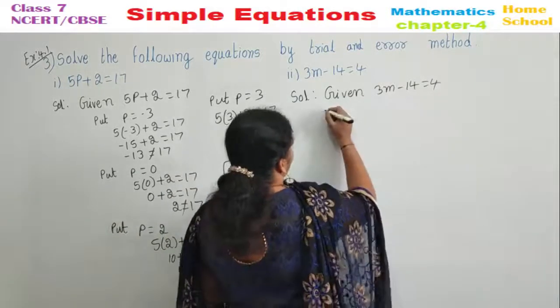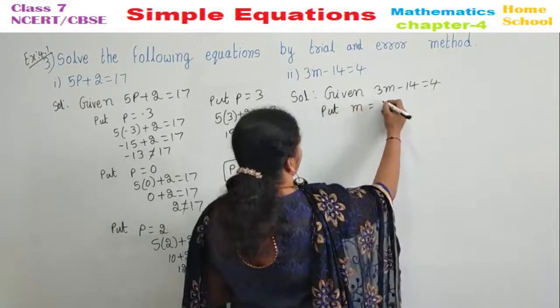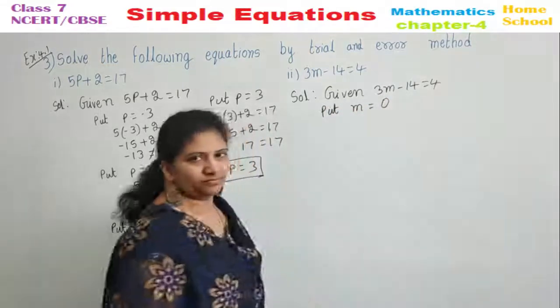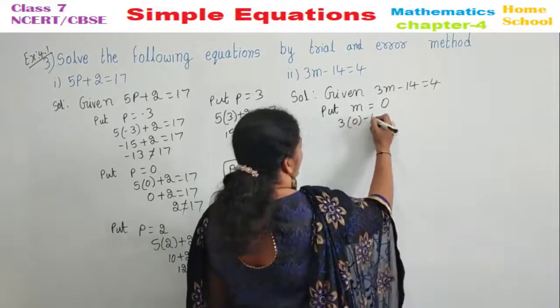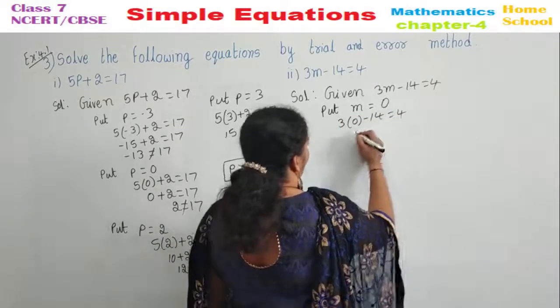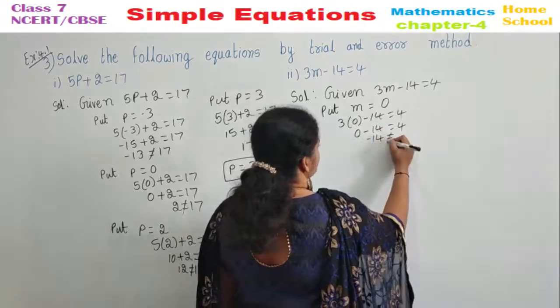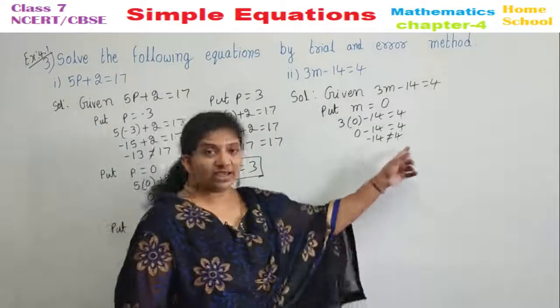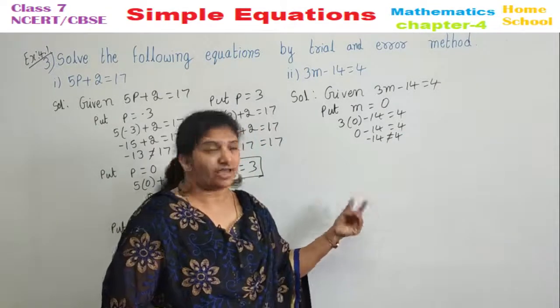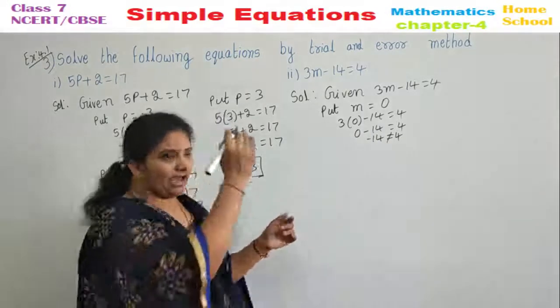Now, what shall we take here? Put M is equal to 0. Let us take. If we take 0, 3 into 0 minus 14 equal to 4. 0 minus 14 equal to 4. Minus 14 is not equal to 4. Are these two equal? No, they are not equal. They have a lot of difference between those two. So, we take a little higher number.